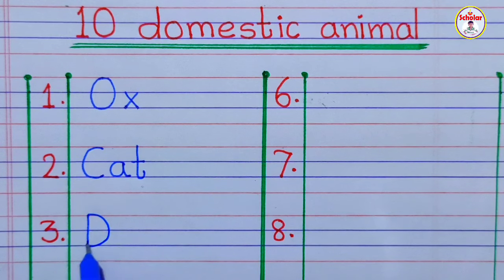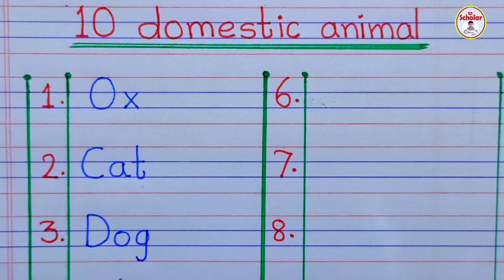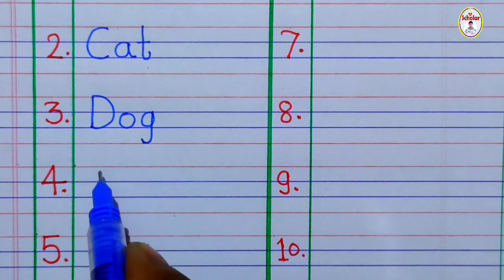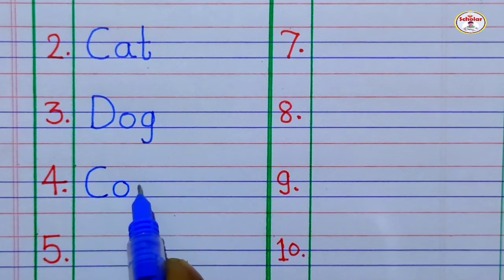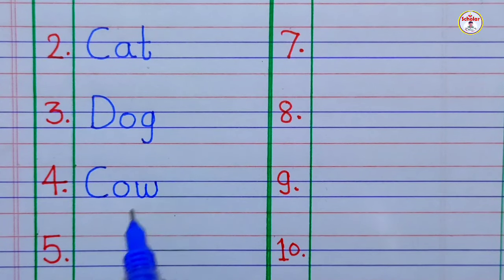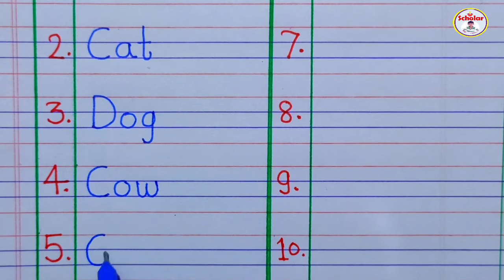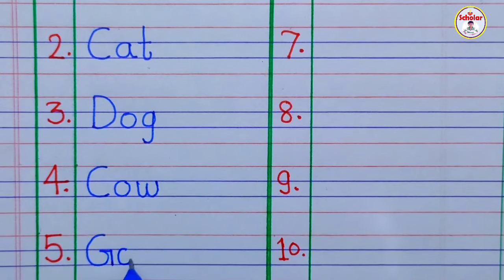d, o, g — dog. c, o, w — cow. g, o, a, t — goat.